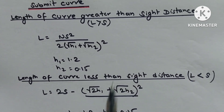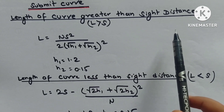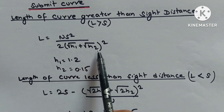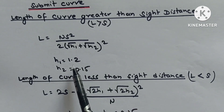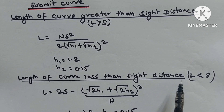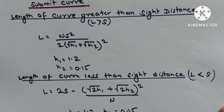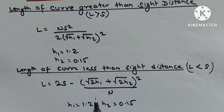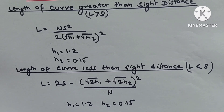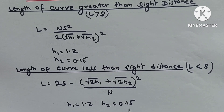Summit curve: When length of curve L is greater than sight distance S, L = NS²/(√2H₁ + √2H₂)², with H₁ = 1.2 m and H₂ = 0.15 m. When L is less than S, L = 2S − (√2H₁ + √2H₂)²/N, with H₁ = 1.2 m and H₂ = 0.15 m.